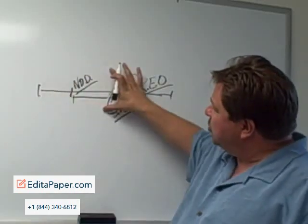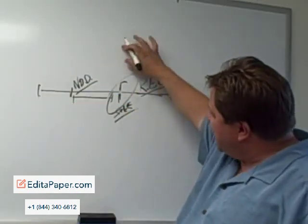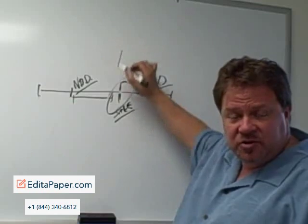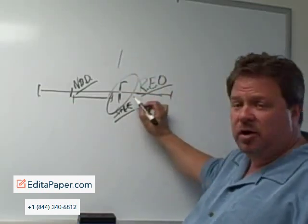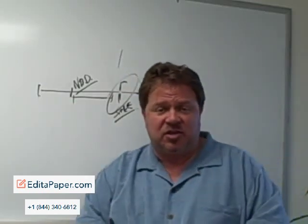So you've got pre-foreclosure over here. You've got the actual foreclosure date or sale in the middle. And over here on the right, after the bank takes it back, it's the REO.